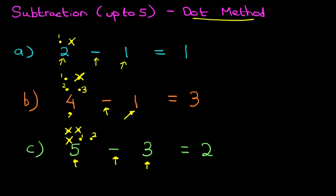So if you are faced with a question like this and you don't know how to work it out, you can always use the dot method by writing the dots on the left hand side first above the number, and then taking away what the number on the right says. Now you have a practice with these.